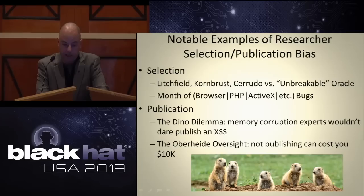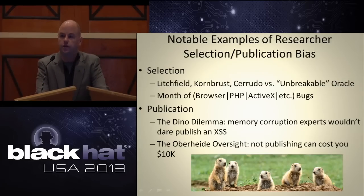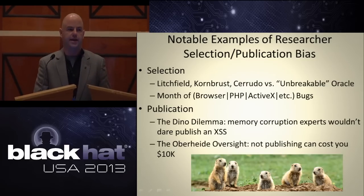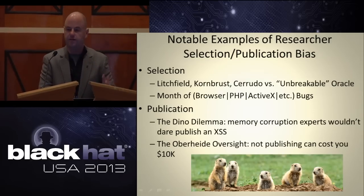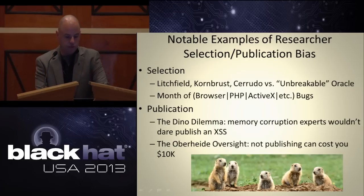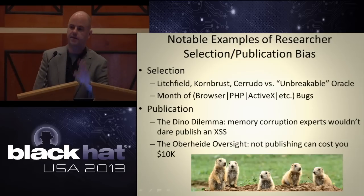Notable examples of researcher selection and publication bias: Litchfield, Cornbrust and Ceruto versus the 'unbreakable Oracle' — a few people said I think that guy is full of it, I'm going to prove him wrong, and they did. Back in the day there was the common theme of 'the month of whatever bugs' — one researcher or a team would release 30 or 31 days of vulnerabilities in a web browser, a PHP app, ActiveX, whatever. What does that do to the stats? It starts to elevate certain ones. Then the 'Deno dilemma' — memory corruption, yeah he'll publish that; cross-site scripting, he's not going to waste his time. And the 'Oberhide oversight' — not publishing can cost you $10,000.